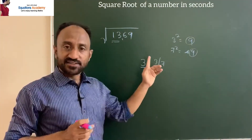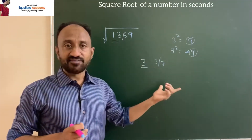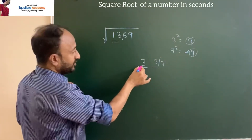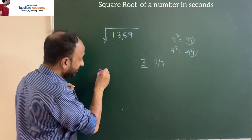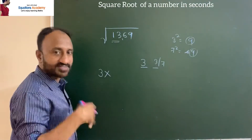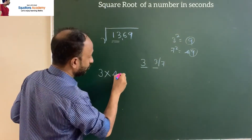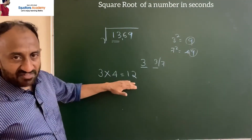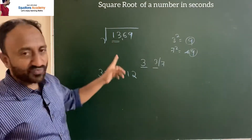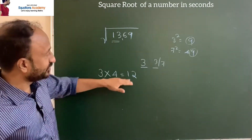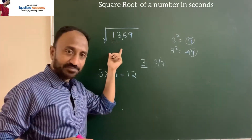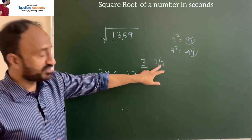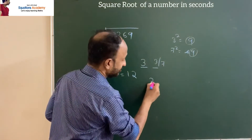Now, to confirm whether 3 or 7 comes at the unit's place: we put 3 at the tens place, then multiply by its succeeding number — 3 into 4 is 12. Compare this 12 with our question's left pair, which is 13. Which is bigger? 13 is bigger. If the question's pair is bigger, choose the bigger number from our two unit digit options, which is 7. So our answer is 37.